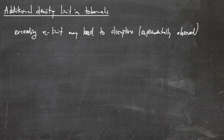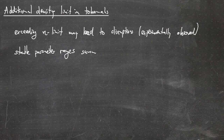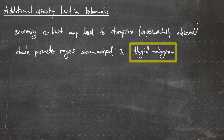The stable parameter ranges where a tokamak can be operated without crossing the density limit are summarized in a certain type of plot. The stable parameter ranges are summarized in what I believe is called a Hugill diagram — maybe pronounced 'Eugl' — and Hugill came up with that in 1983.